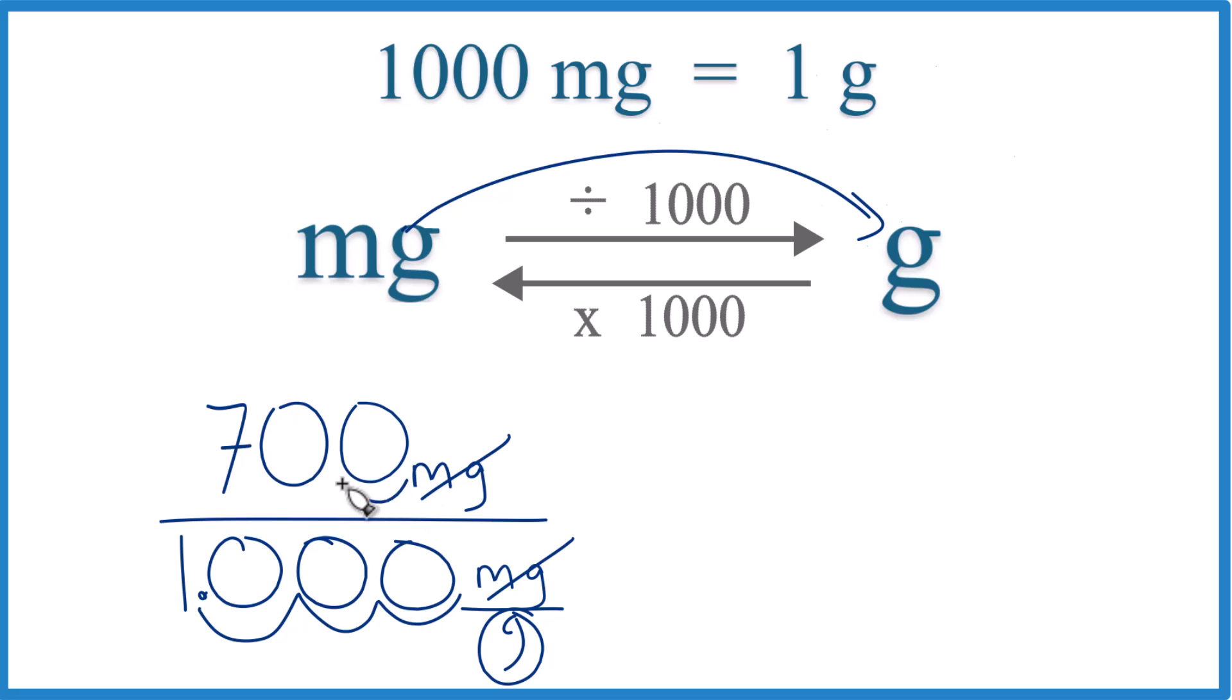And 700 milligrams equals 0.7 grams. That's it. This is Dr. B converting 700 milligrams to grams. The answer is 0.7 grams. Thanks for watching.